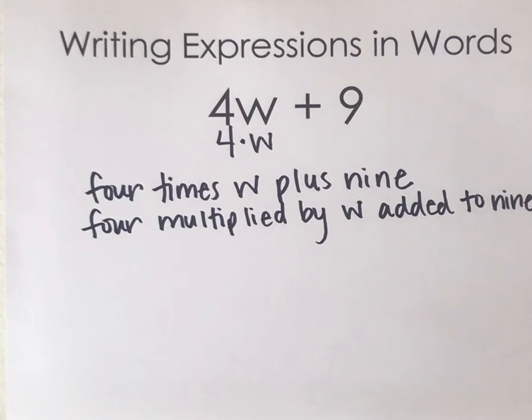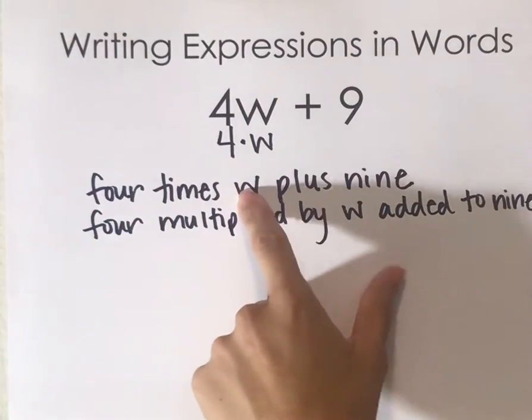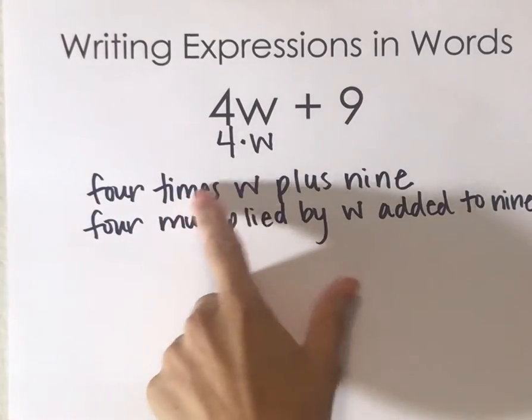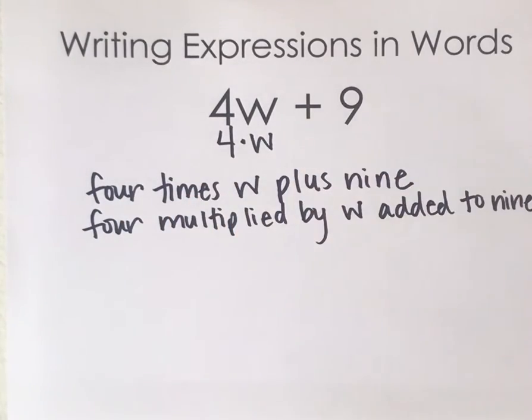And then you can definitely do variations of that. You could say four times W increased by nine. You could even say four times W greater than nine.